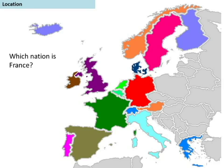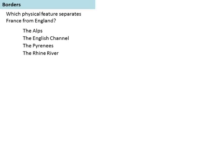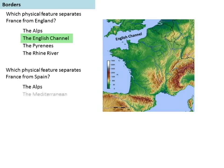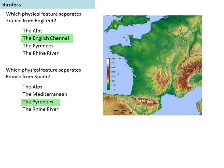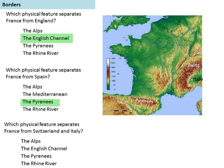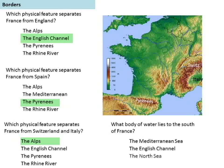Review: Which physical feature separates France from England? The English Channel - the Alps are in the south. What physical feature separates France from Spain? The Pyrenees Mountains. What body of water lies to the south of France? The Mediterranean Sea.